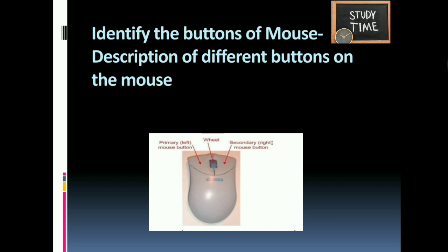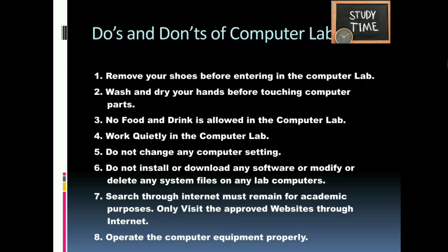Mouse buttons: the left mouse button is used to point to any menu, tool, icon, or to select text and surfaces, and can be used to select multiple items. The scroll wheel is used to scroll up and down. The right mouse button is used to invoke the shortcut menu.